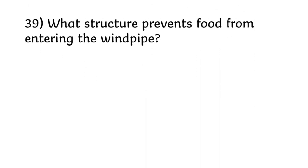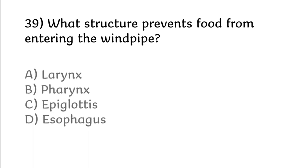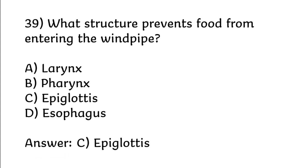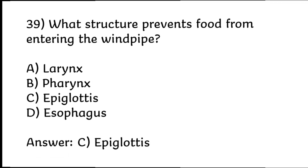What structure prevents food from entering the airway? Larynx, pharynx, epiglottis, esophagus. Correct answer is Option C: Epiglottis.